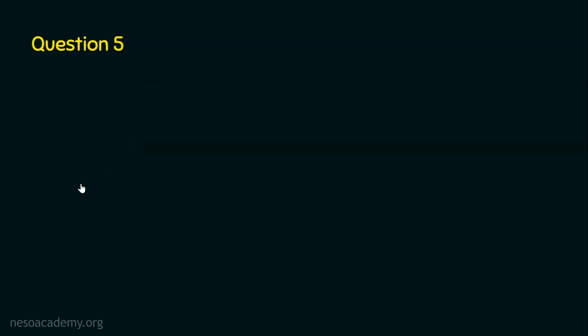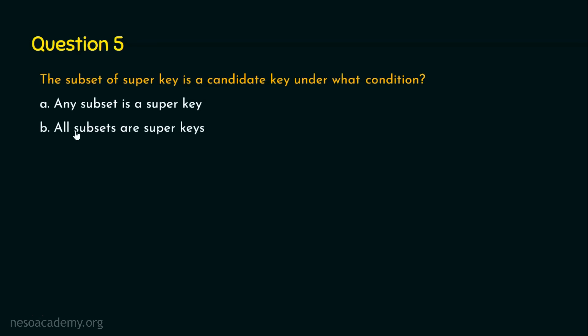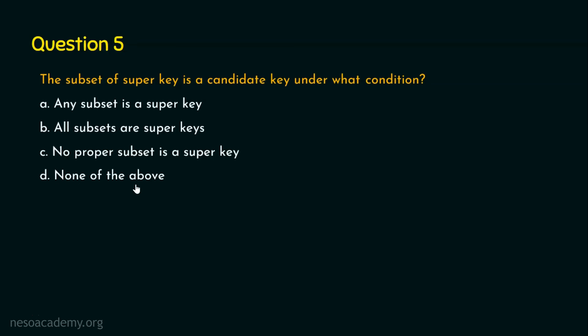Question number five: the subset of a super key is a candidate key under what condition? Options: Option A, any subset is a super key; Option B, all subsets are super keys; Option C, no proper subset is a super key; Option D, none of the above.